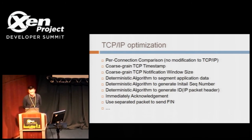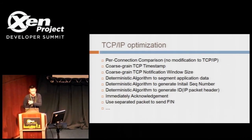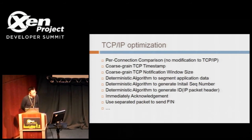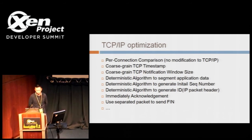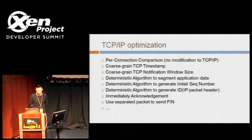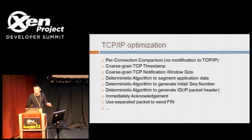The first update is our TCP/IP optimization. The main goal is to make the packet response between the primary VM and the secondary VM be more similar, so we can have fewer checkpoints and better performance. The first item is per-connection comparison. From server scenarios, there could be multiple connections between the client and server, and it's hard to anticipate the packet orders among multiple TCP connections, which triggers many checkpoints. If we change the comparison to do per-connection comparison, the situation becomes much better.